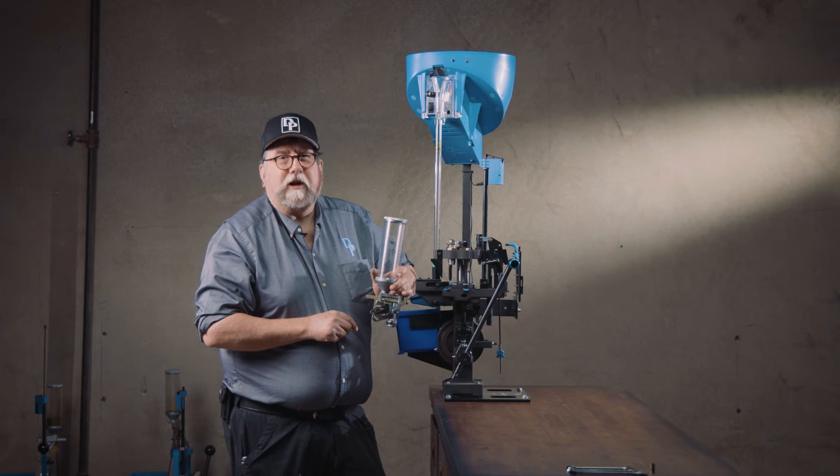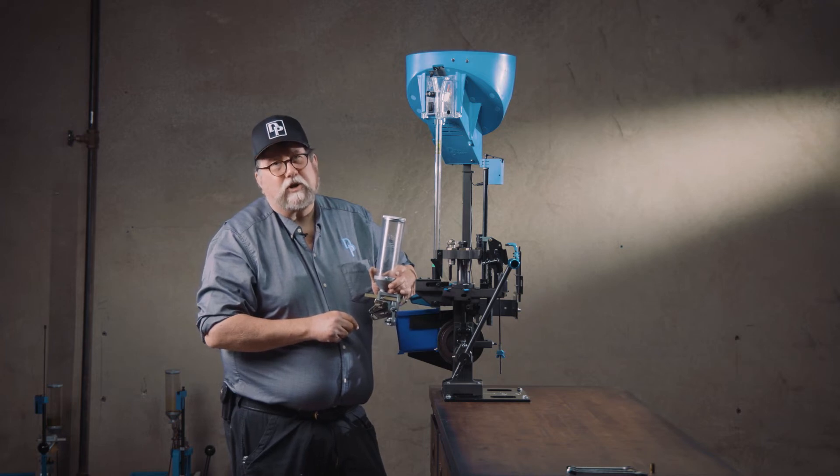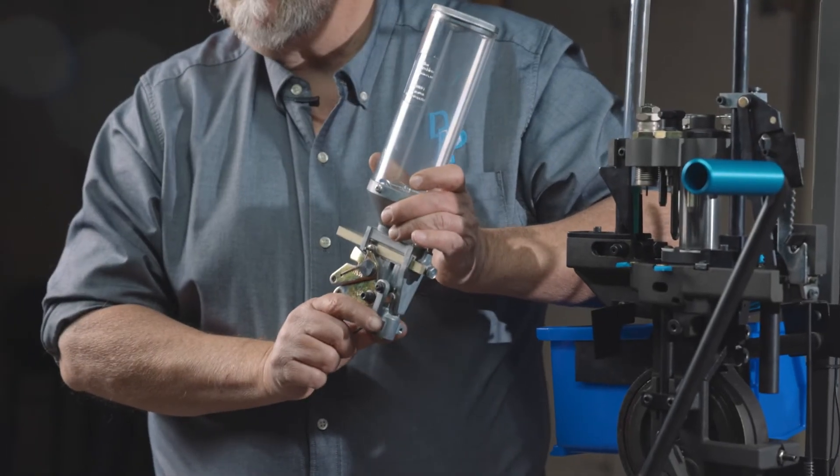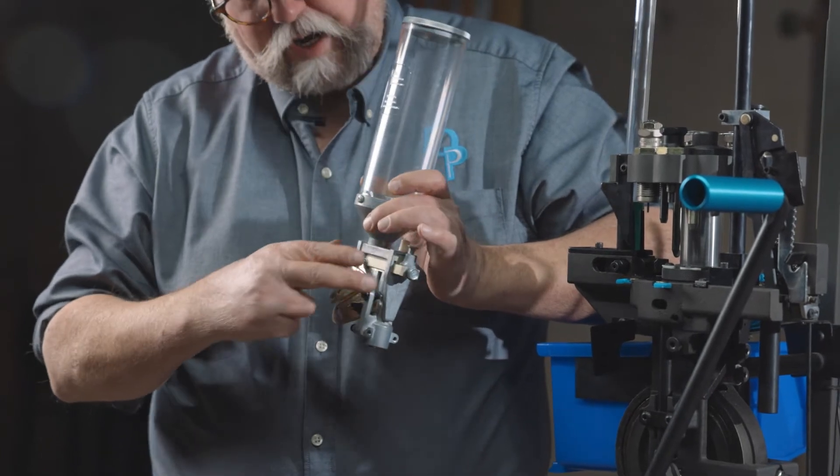There are a few points of lubrication on the powder measure, mostly involving the connector body collar, the part that the powder measure body slides up and down on.